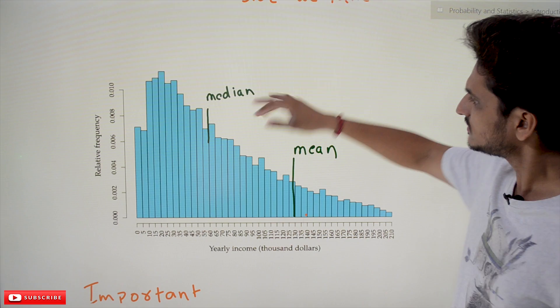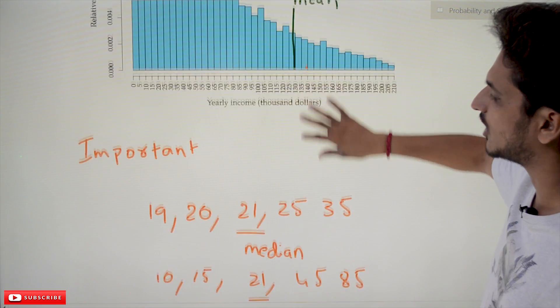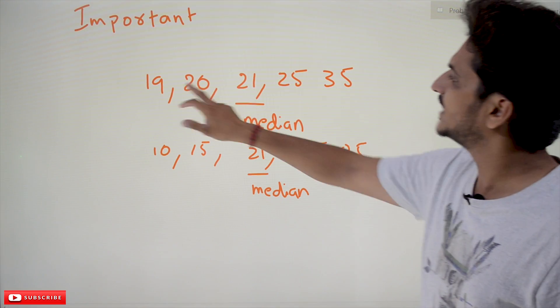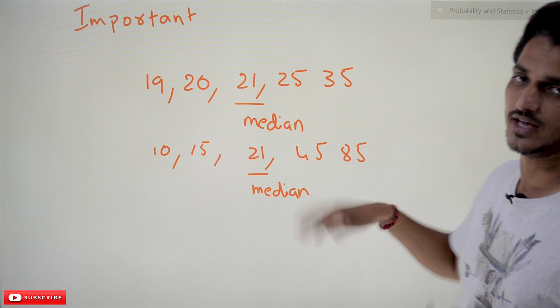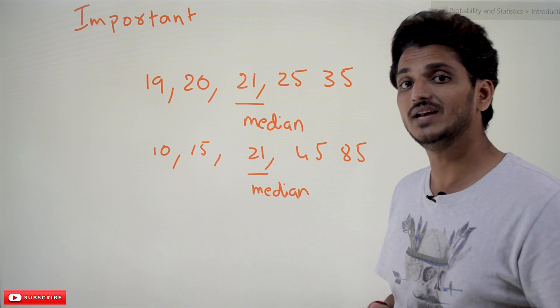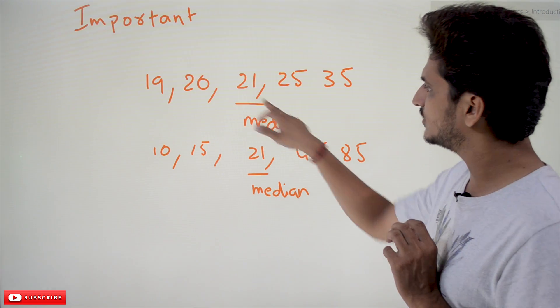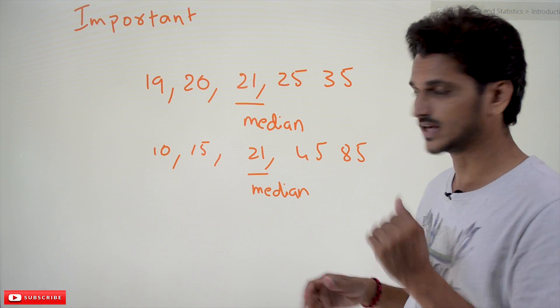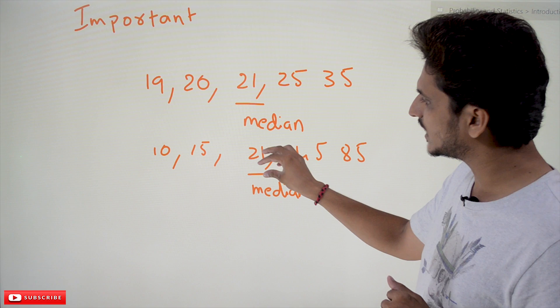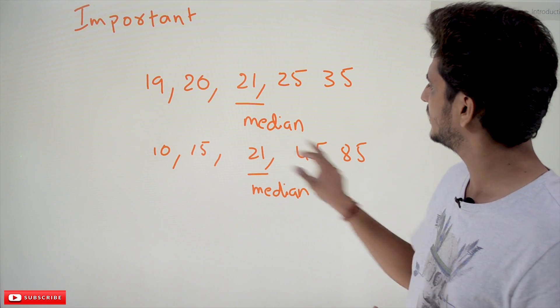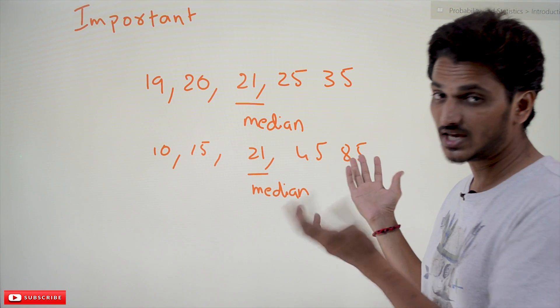Now coming to one important point you have to understand: 19, 20, 21, 25, 35. Assume that this is our data. What's the median value we consider here? 21. The median value is 21. But take one more example. Keep 21 like this, change the values: 10, 15, 45, 85.